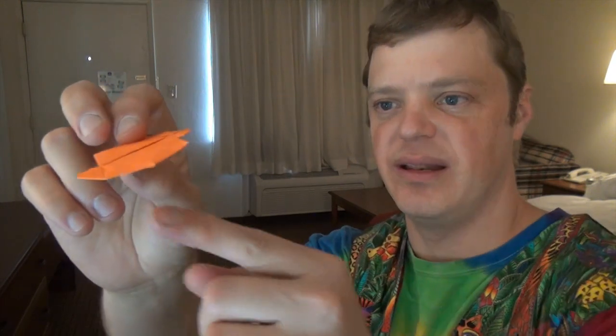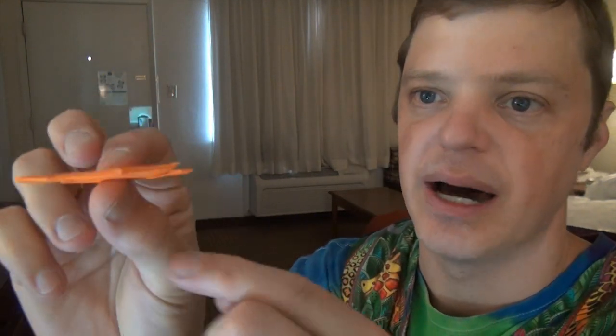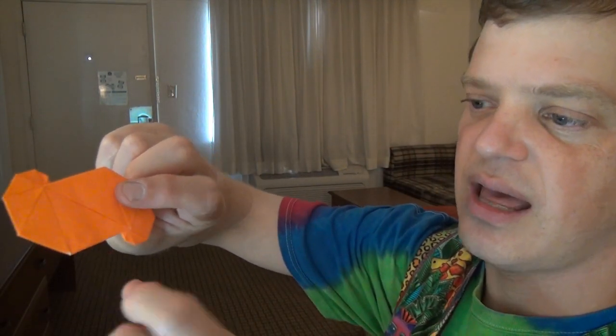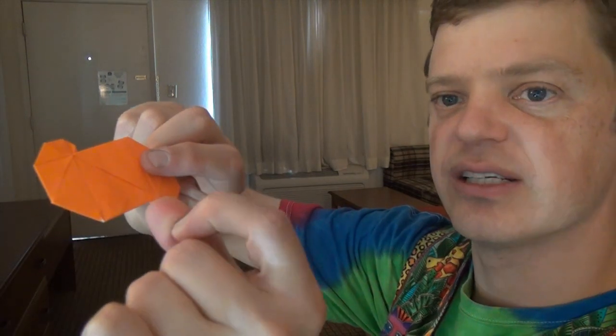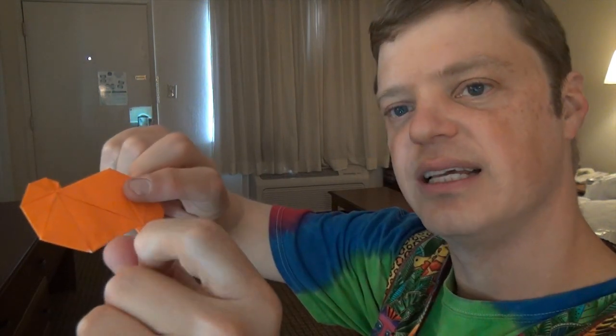So in order to fly it, you want these little tiny flaps to be on the bottom side, so the part that's facing towards the ground. And you want to flick it right about here. And you want to flick it with your index finger. So just practice flicking like that. Hold it, your index finger on your thumb and just release.